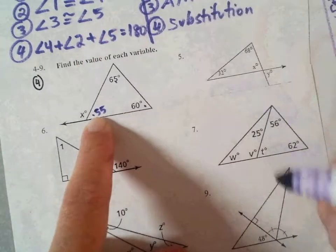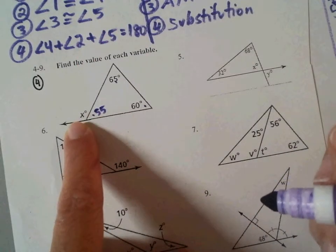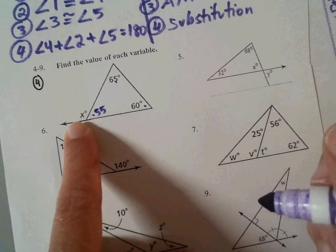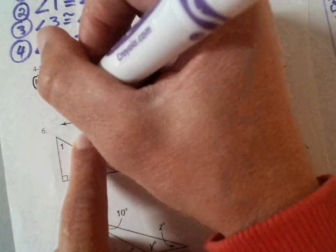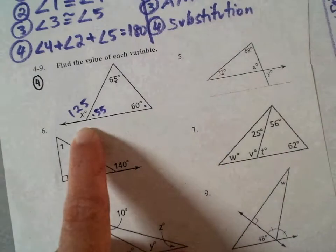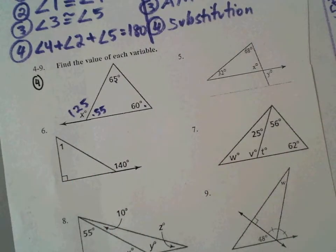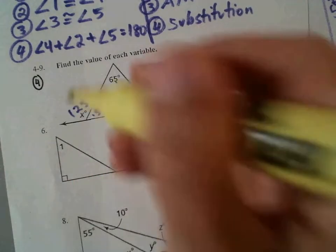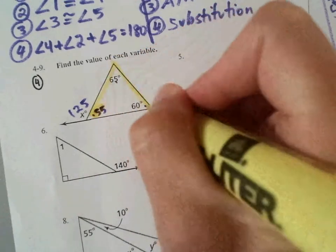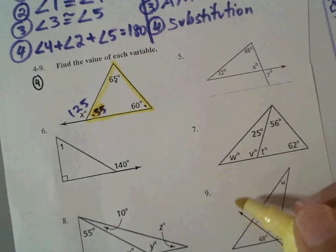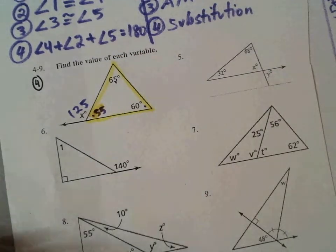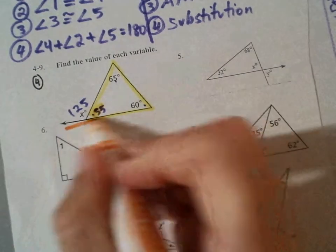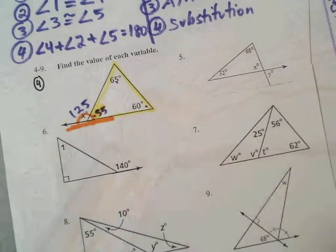And then how do you end up getting X? 180 minus 55. So that went very fast. Did everyone hear what everybody did? Step number one was to get this angle, and that was because these three add to 180. And then once we get 55, we see that it's a straight line, and straight lines add to 180. That's a linear pair.